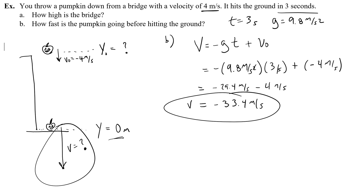It makes sense that it's negative because this is a velocity going down right before it hits the ground. Make sure you don't think that the velocity before the object hits the ground is zero. It's true that after the pumpkin hits and splatters it'll come to a stop, but in free fall problems the final velocity is always the velocity it reaches at the end of the fall — not after it has hit the ground. So it's always before hitting the ground.